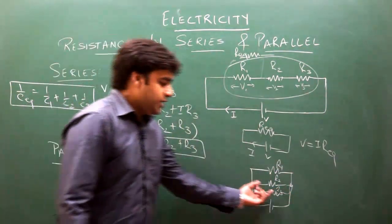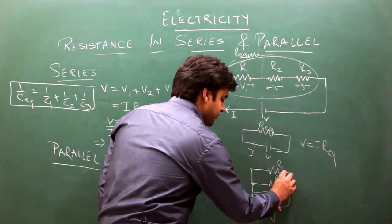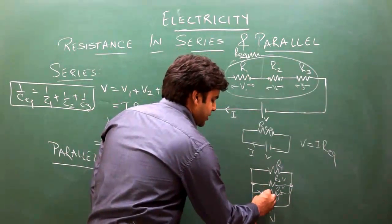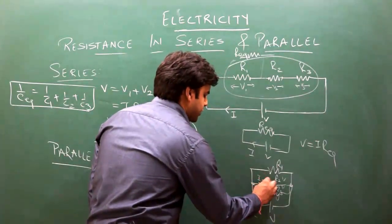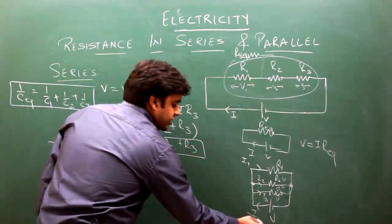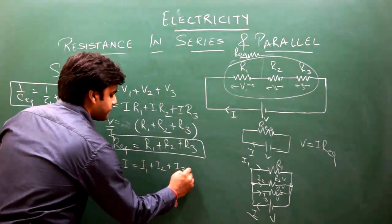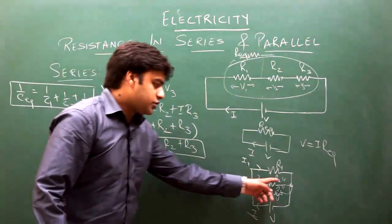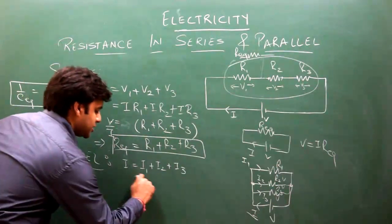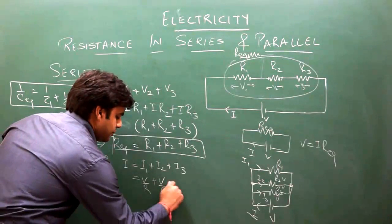In parallel, the potential drop across each resistor remains the same: V. But the current from the battery splits: I = I1 + I2 + I3. In parallel case, current I from battery equals I1 + I2 + I3, which is V/R1 + V/R2 + V/R3.